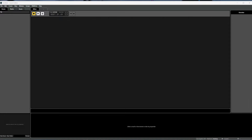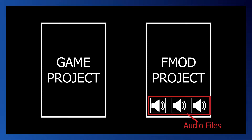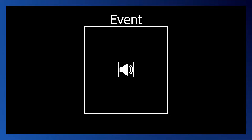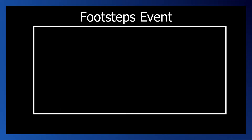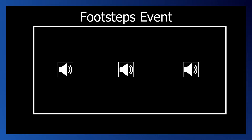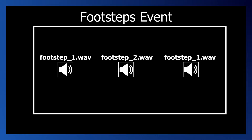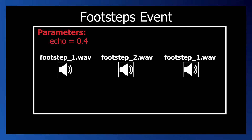Before we jump into actually using FMOD, I think it's worth understanding how it works and how a game is meant to interact with it. Typically, you'll have a single FMOD project that corresponds to your game project and all of your audio files will be stored in the FMOD project. For each piece of audio that the game needs to play, you'll create what FMOD calls an event. An event can be anything from a single sound to a collection of sounds with varying effects and internal logic. An event can also be parameterized, where the sound for that event varies in some way depending on the value of that parameter or parameters.